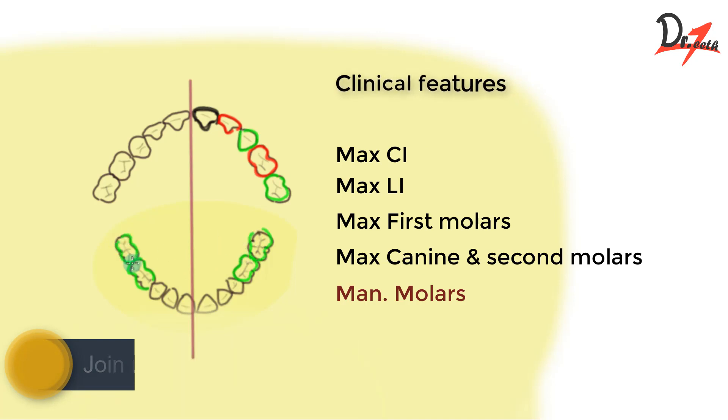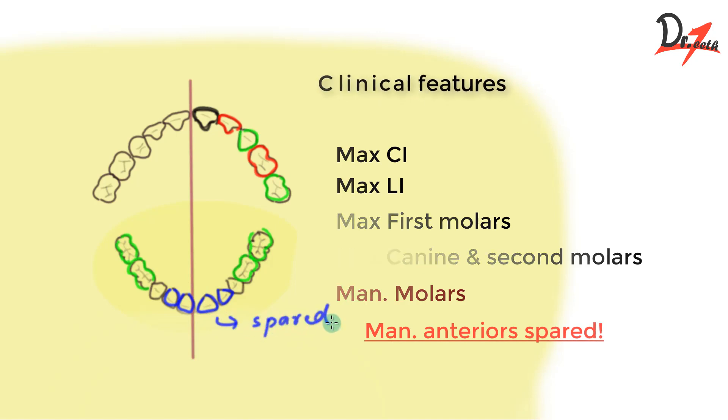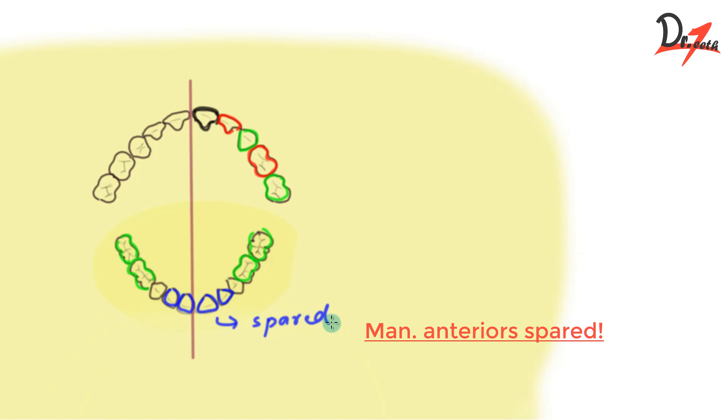And one interesting and very important thing to keep in mind is that the mandibular anterior teeth, the mandibular anteriors, they are usually spared. And why is that so? This is because of two reasons.